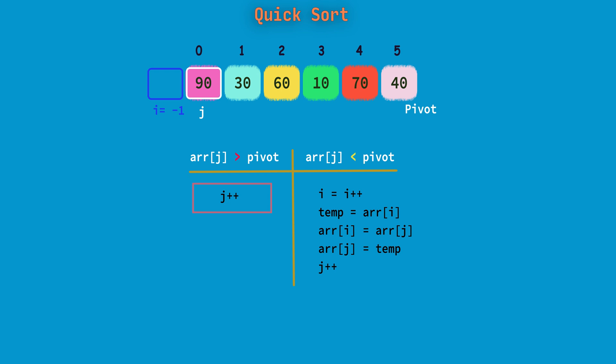We use the jth element to compare against the pivot element. If the jth element is greater than pivot, we will keep moving j by incrementing it by 1. Else if the jth element is less than pivot, then we increment and move the ith index and we will swap the elements at j and i.